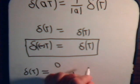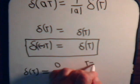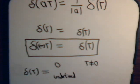If the argument here is not 0, then this is 0. If this is 0, then it's undefined.